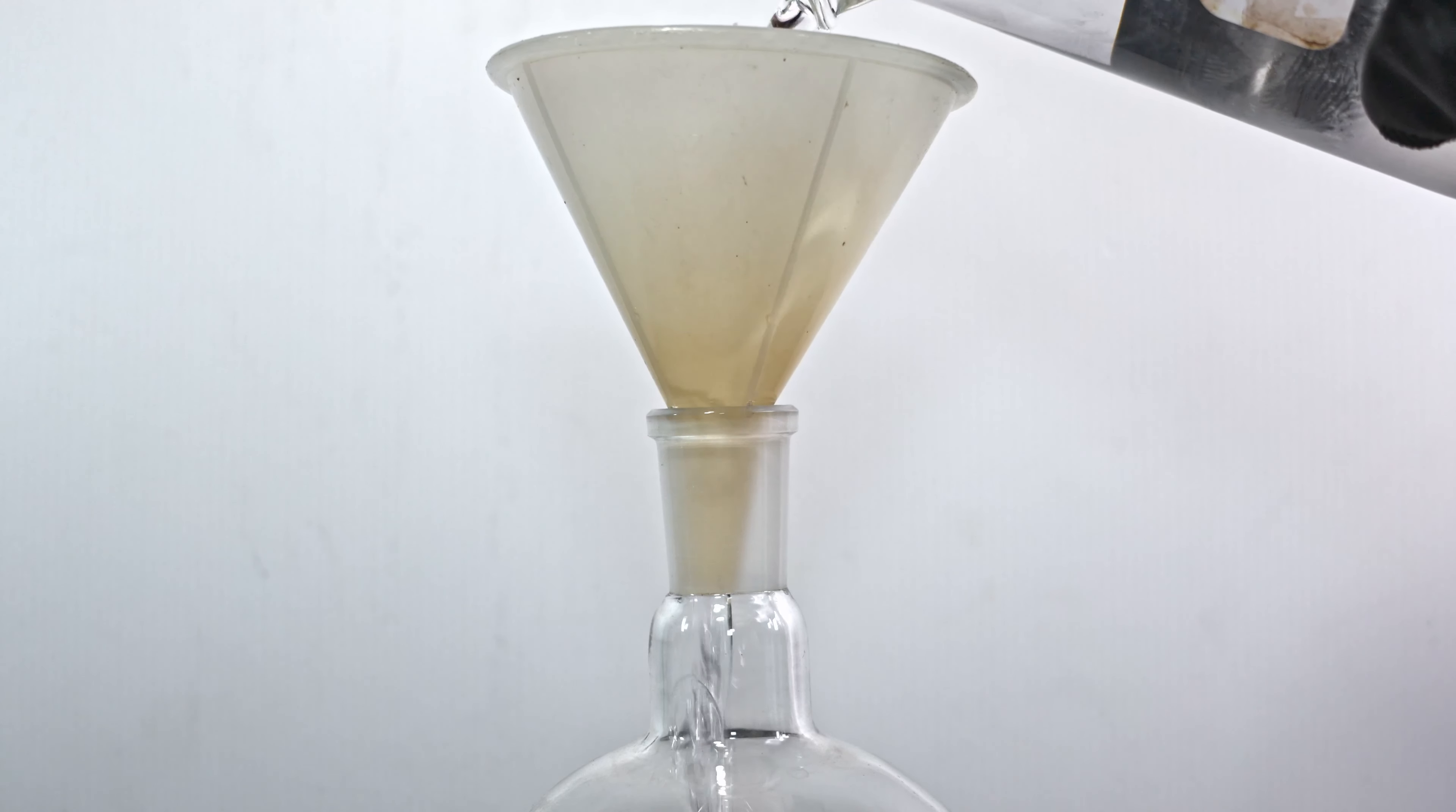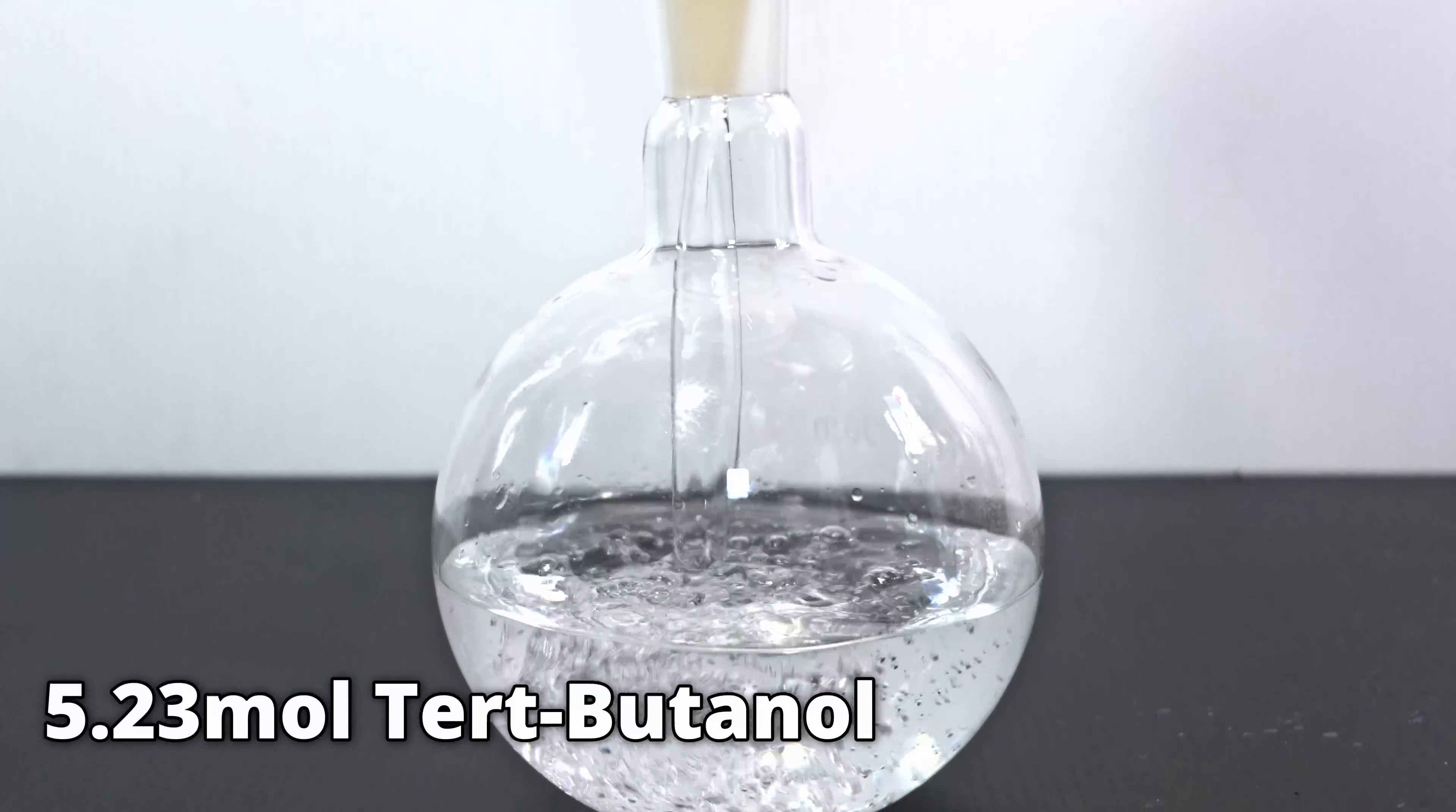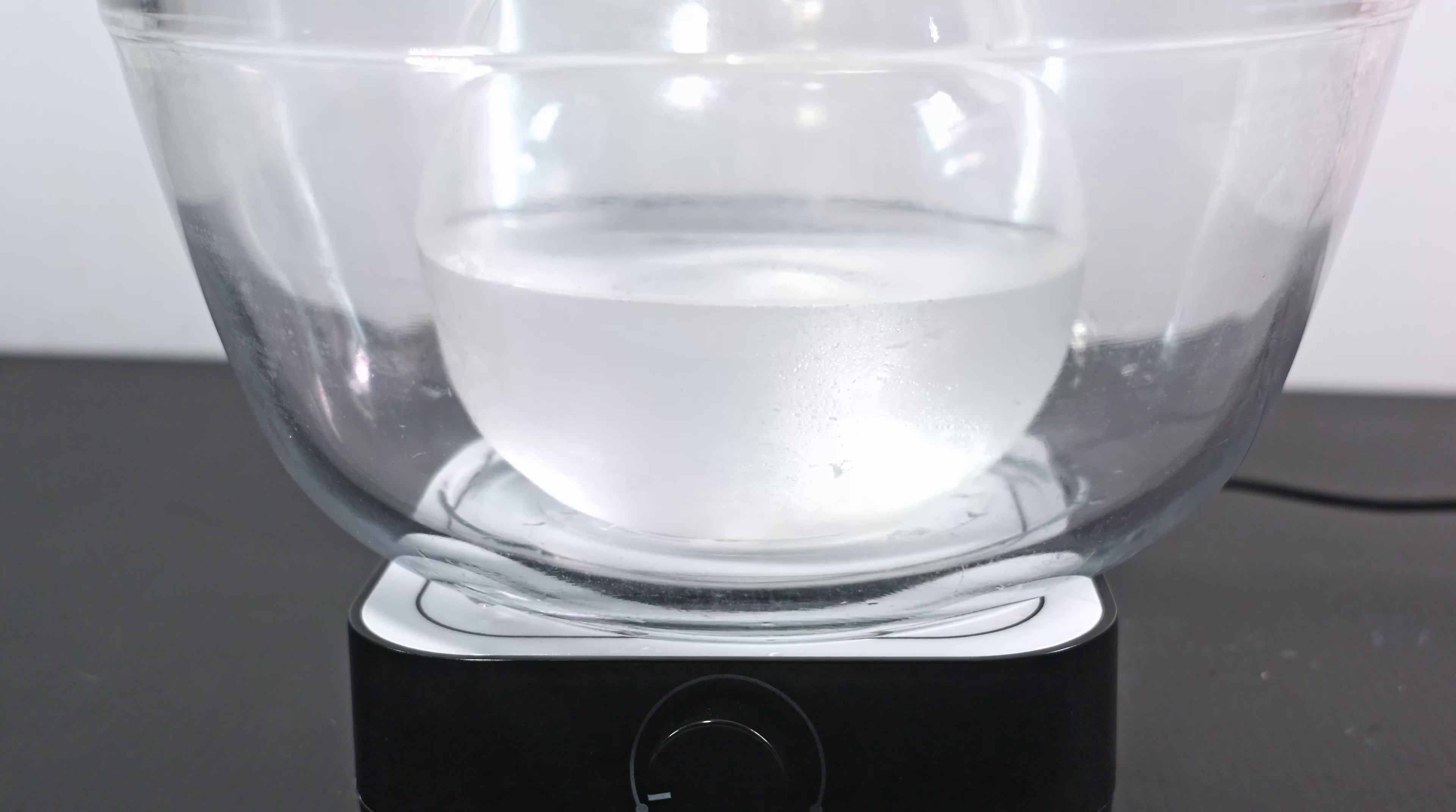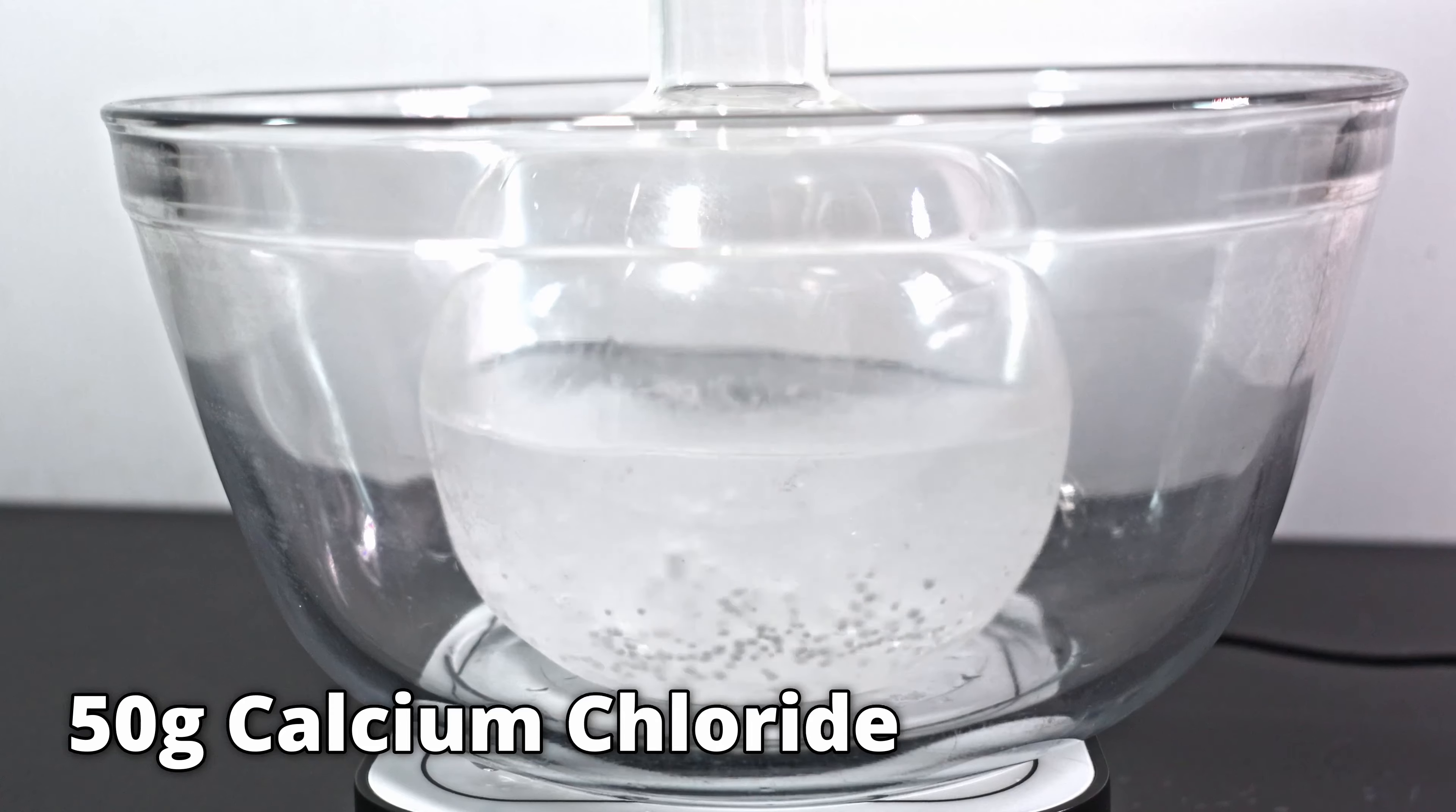The first thing I'm going to do is pour in 500 milliliters of cold tert-butanol into a 1 liter boiling flask. This is approximately 5.23 moles of tert-butanol. Then I'm going to drop in a stir rod and place it on a stir plate. I'm going to set the stir rate on high. That way, the calcium chloride will thoroughly blend instead of settle at the bottom.